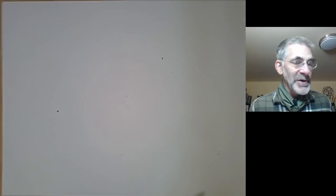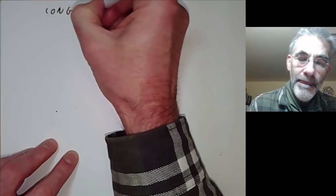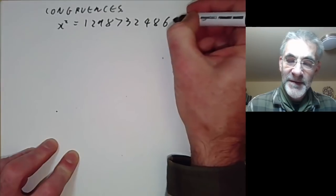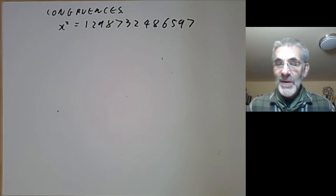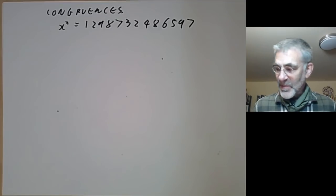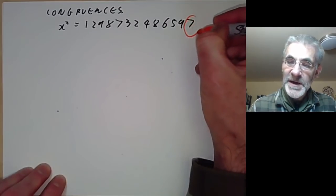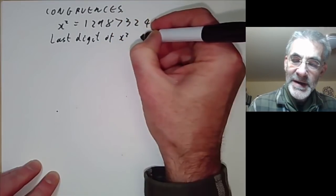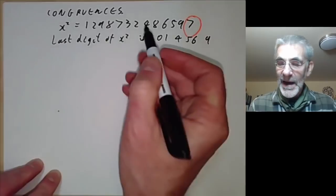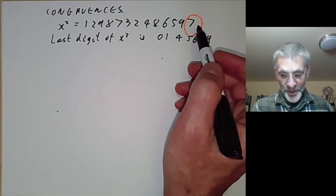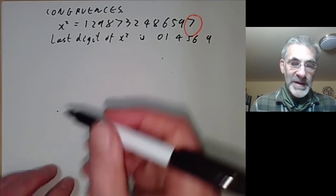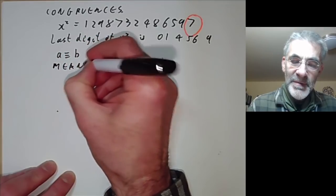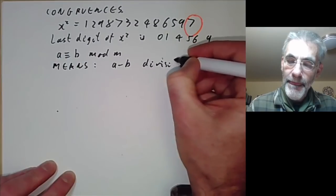One very powerful technique for solving Diophantine equations is congruences. Suppose we want to solve x squared equals 1,298,732,486,597. There's a very quick solution: just look at the last digit, which is 7. The last digit of x squared is always 0, 1, 4, 5, 6, or 9. So we can see instantly that this number can't be a perfect square just by looking at its last digit. This is an example of working modulo 10 — we say a is congruent to b modulo m if a minus b is divisible by m.